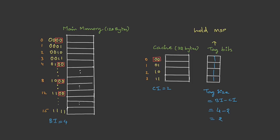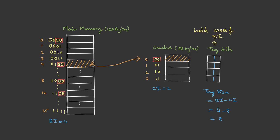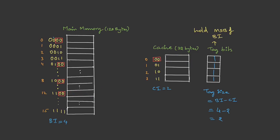The tags hold the most significant bits of the block index. For example, if block 0 is loaded into line 0, the most significant bits are 00, so the tag holds 00. If block 4 is loaded onto line 0, the most significant two bits are 01, so the tag is 01. If it's block 12 into line 0, the most significant bits are 11, so the tag is 11. The most significant two bits are different for each of the four blocks, and this distinction helps us identify which block is actually placed in the cache.